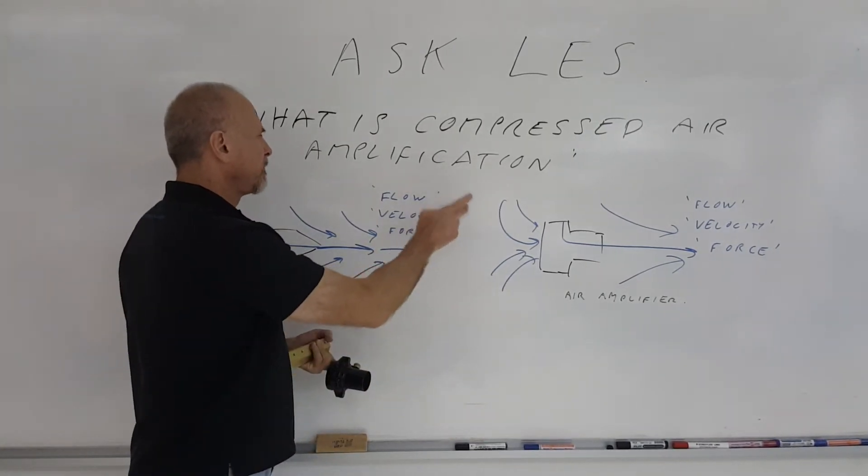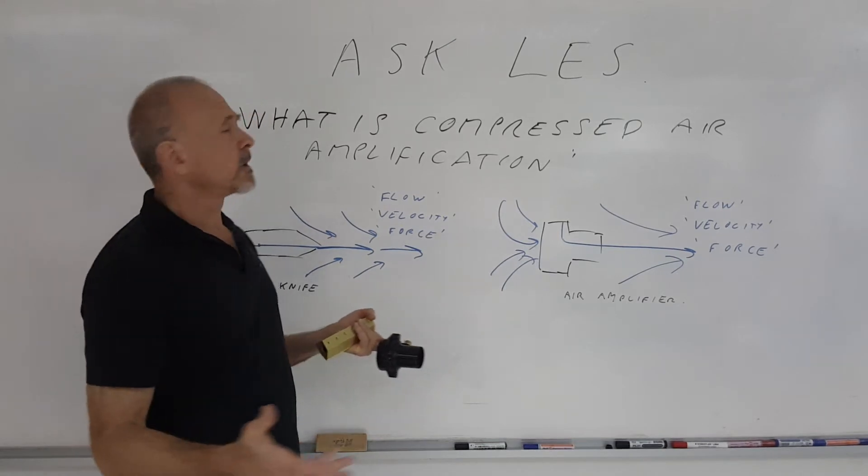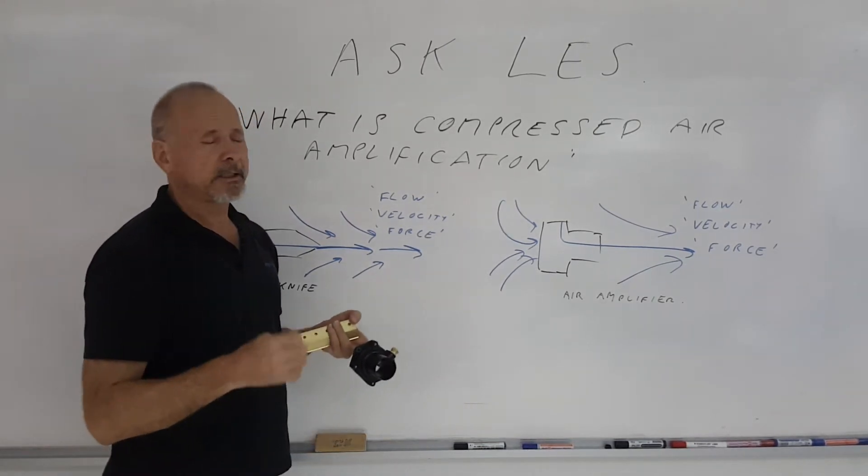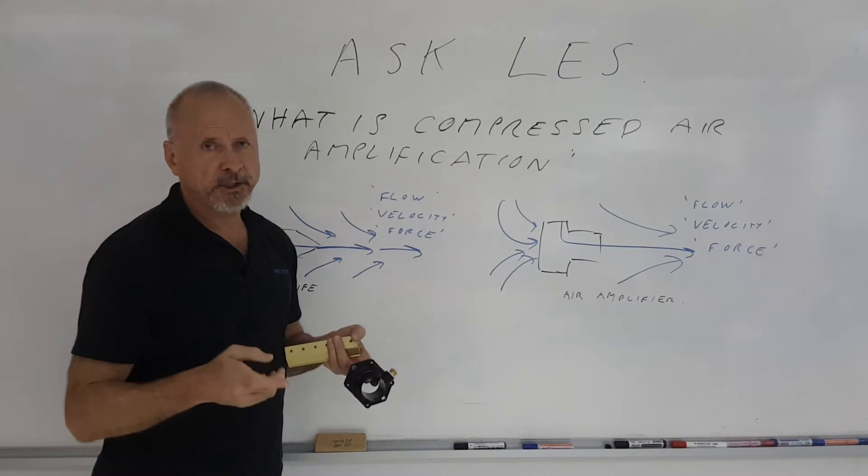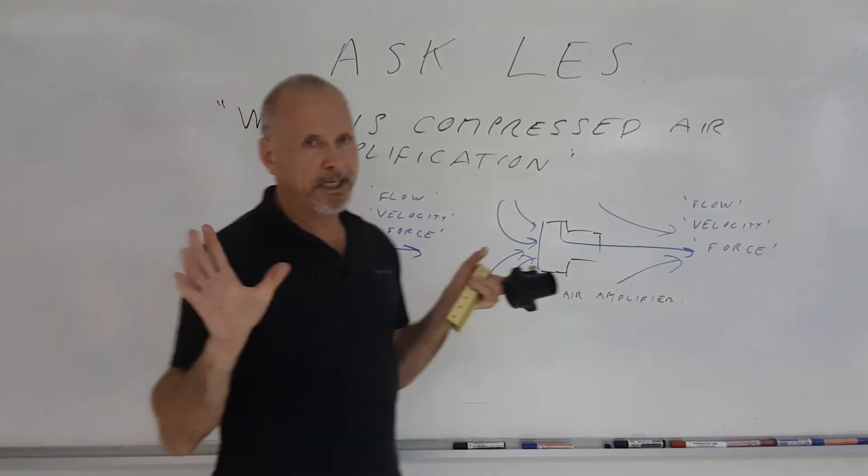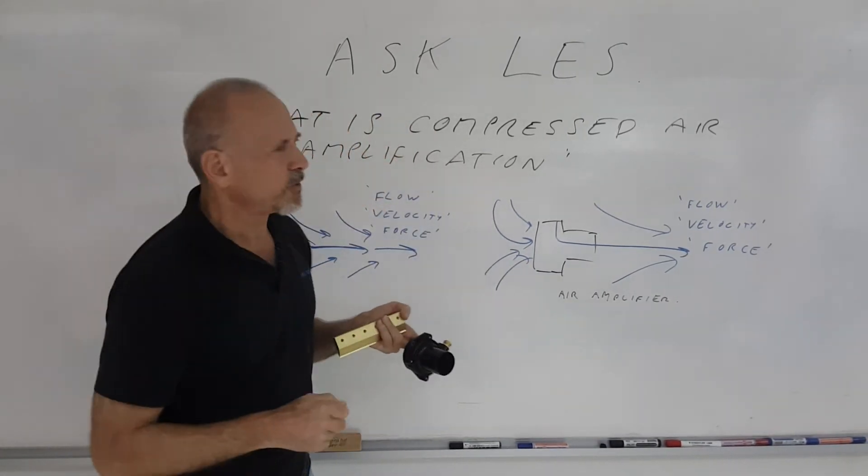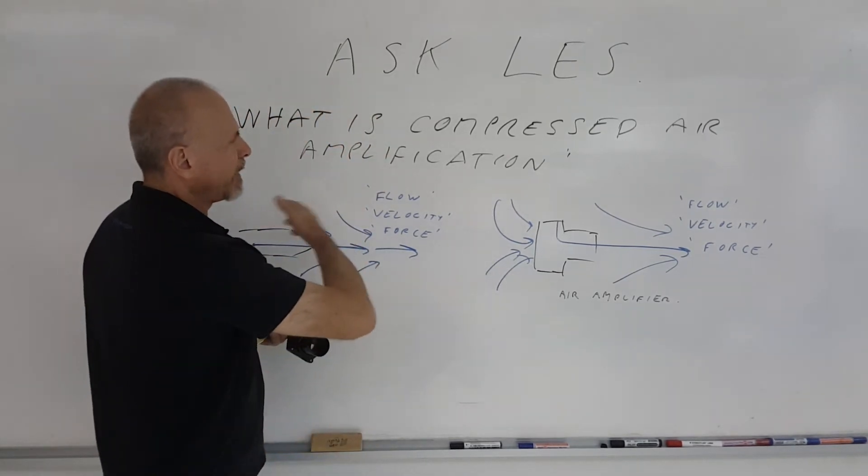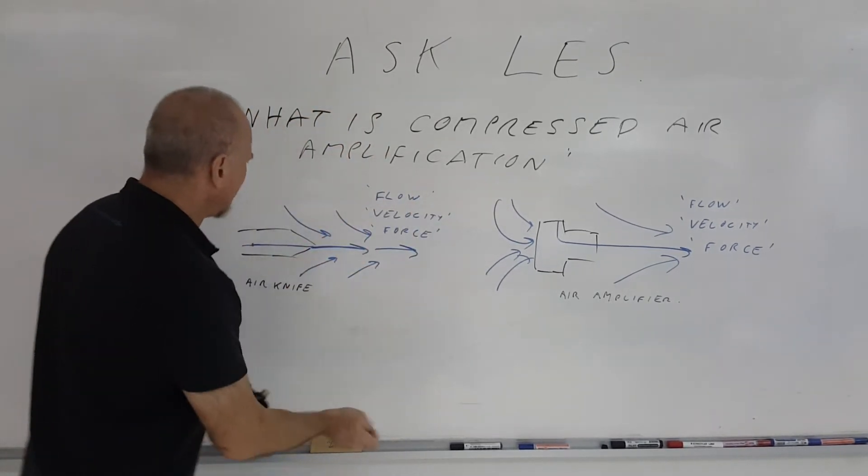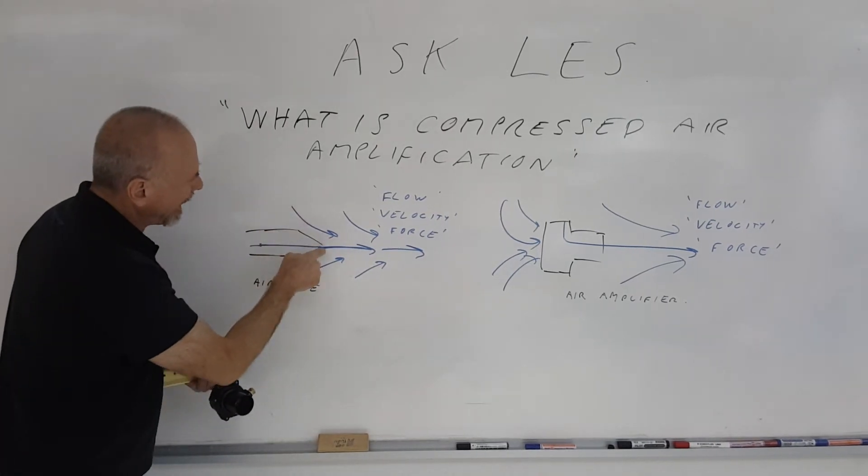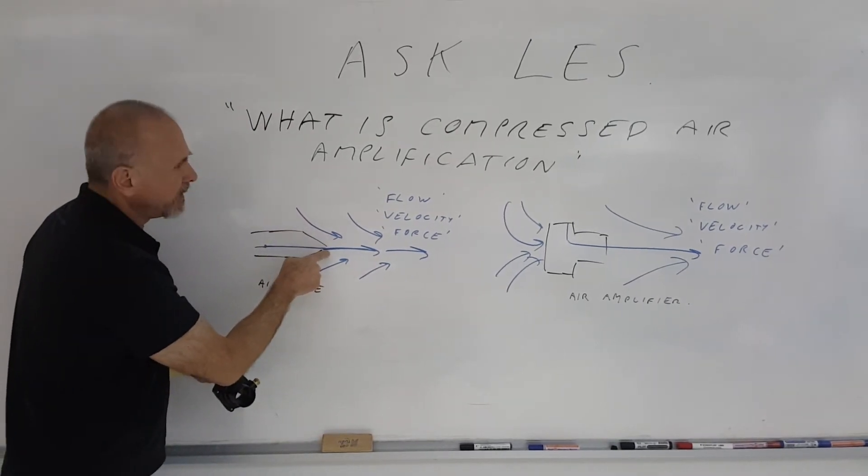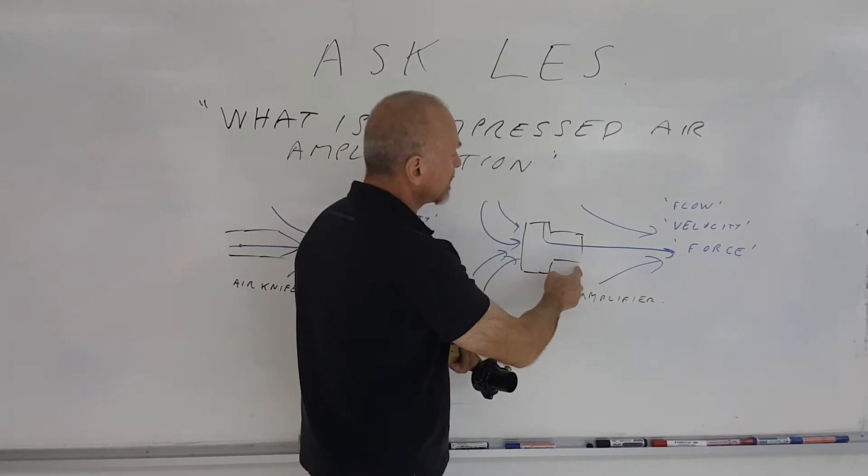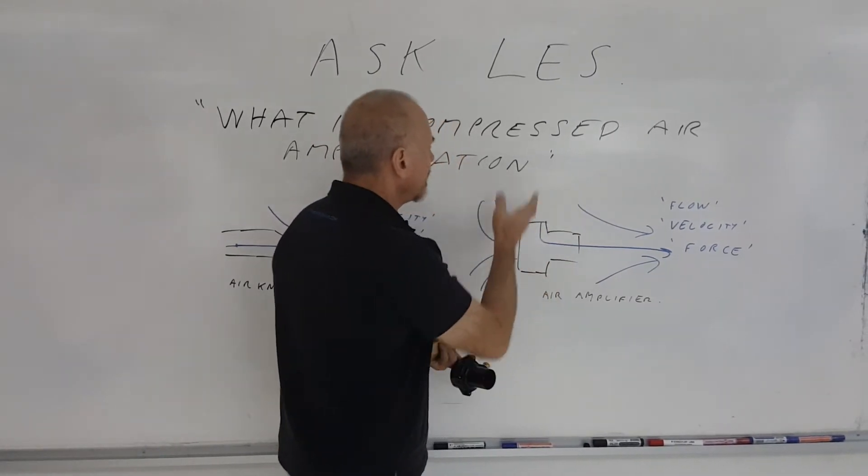Another little trick that people use to explain the differences between air amplification of one product to another is they say it depends on where you measure it. For example, the air amplification at the exit of an air knife or at the exit of an amplifier or a nozzle - that is a measurement of the entrained air at that point.